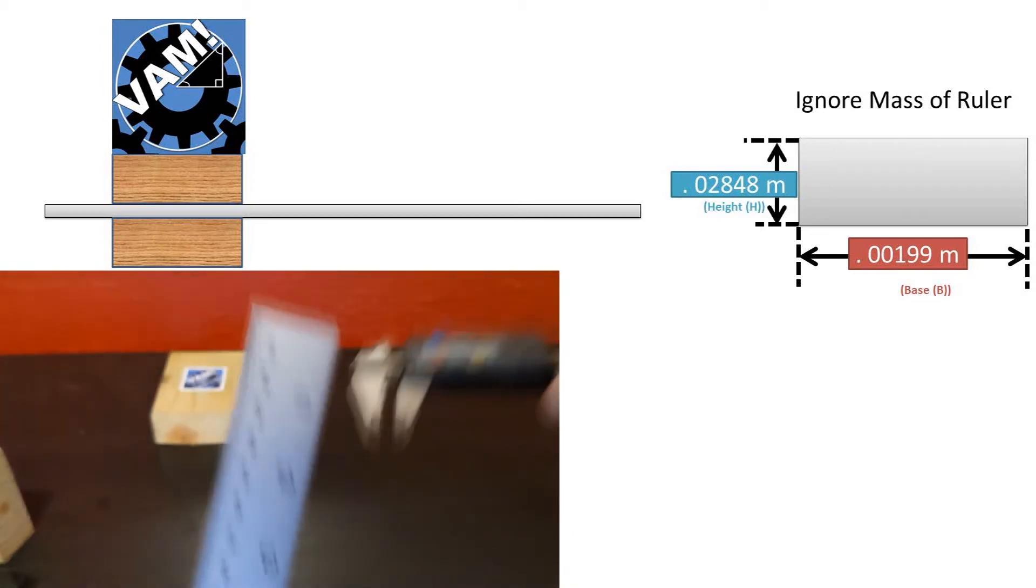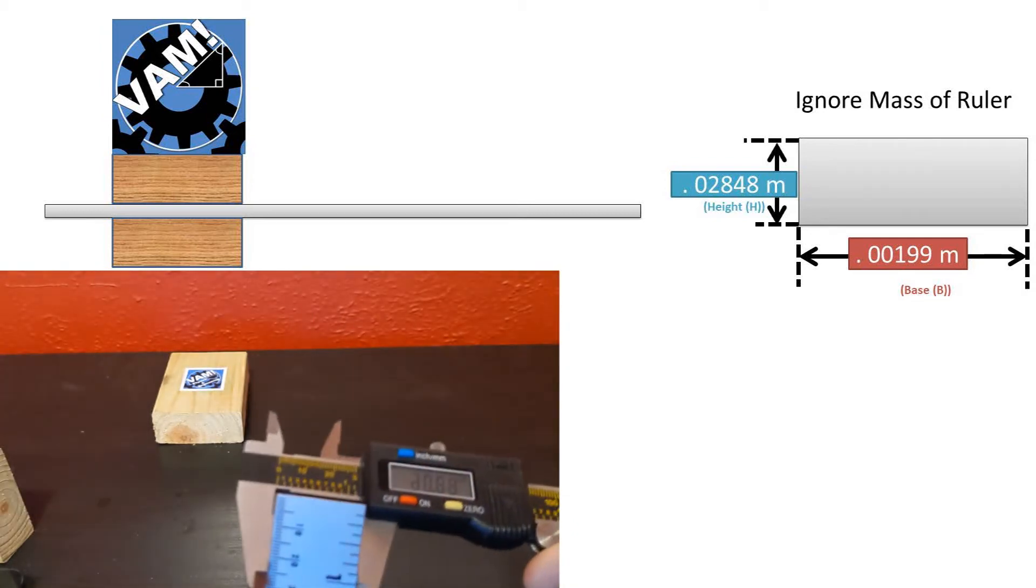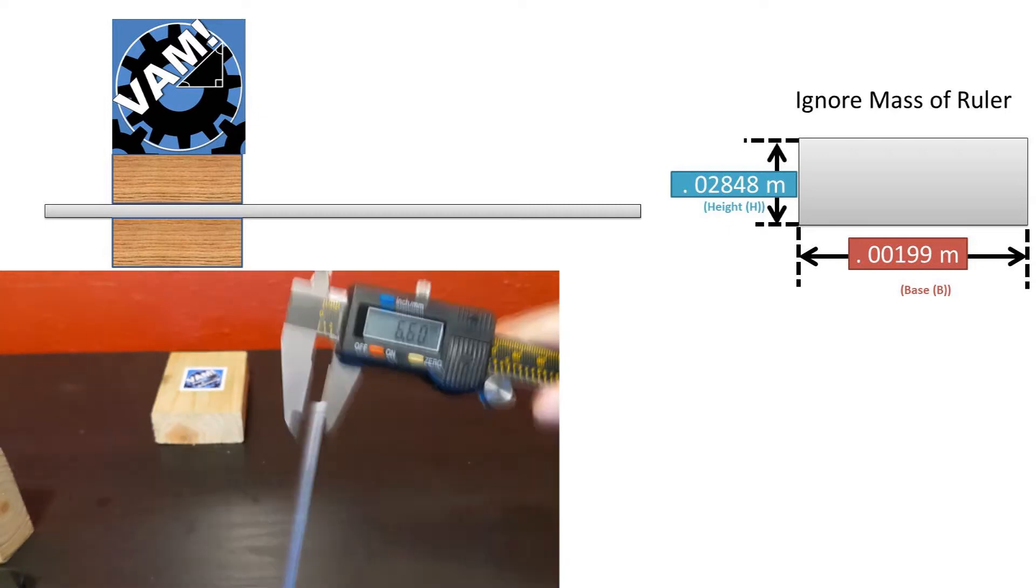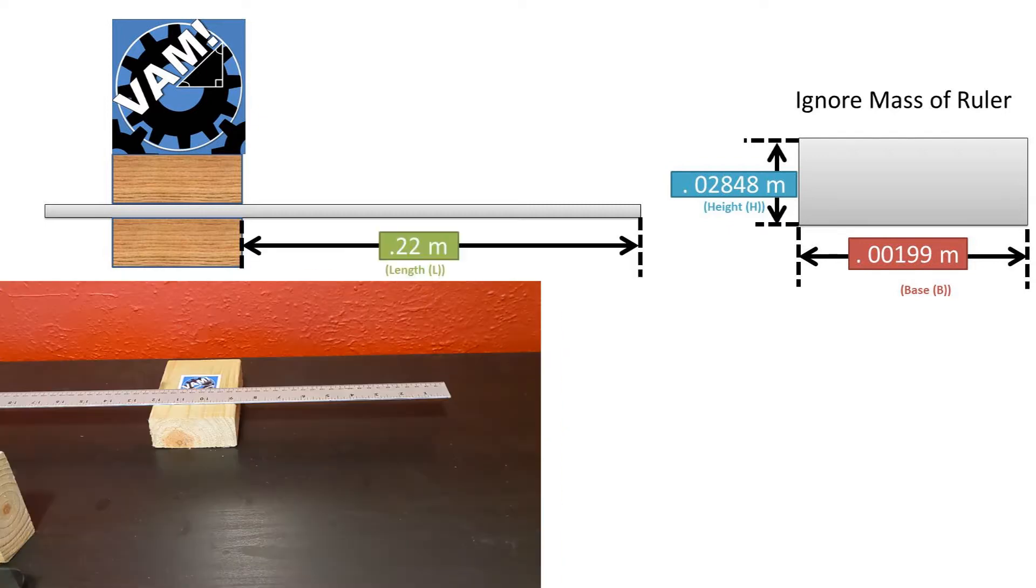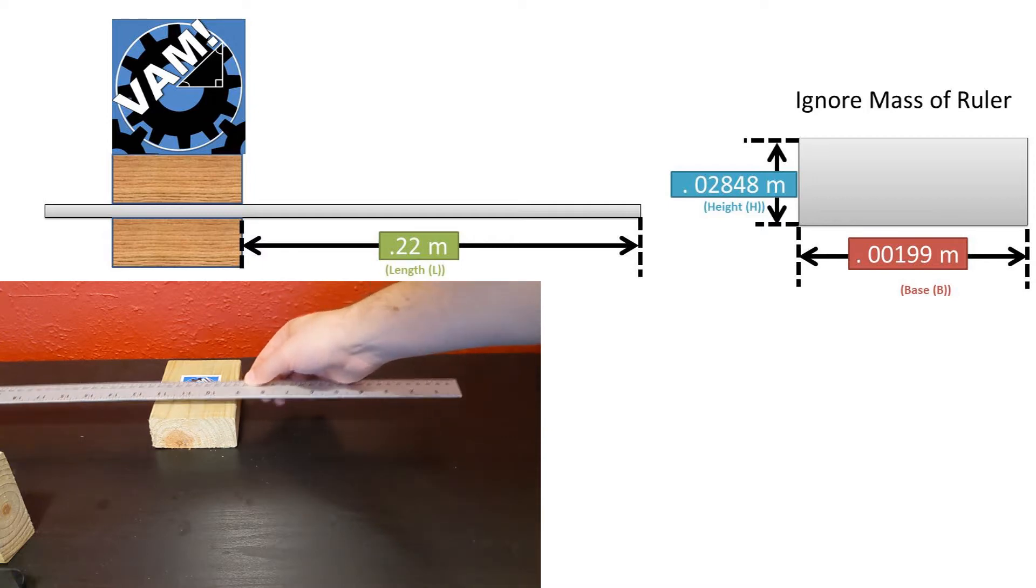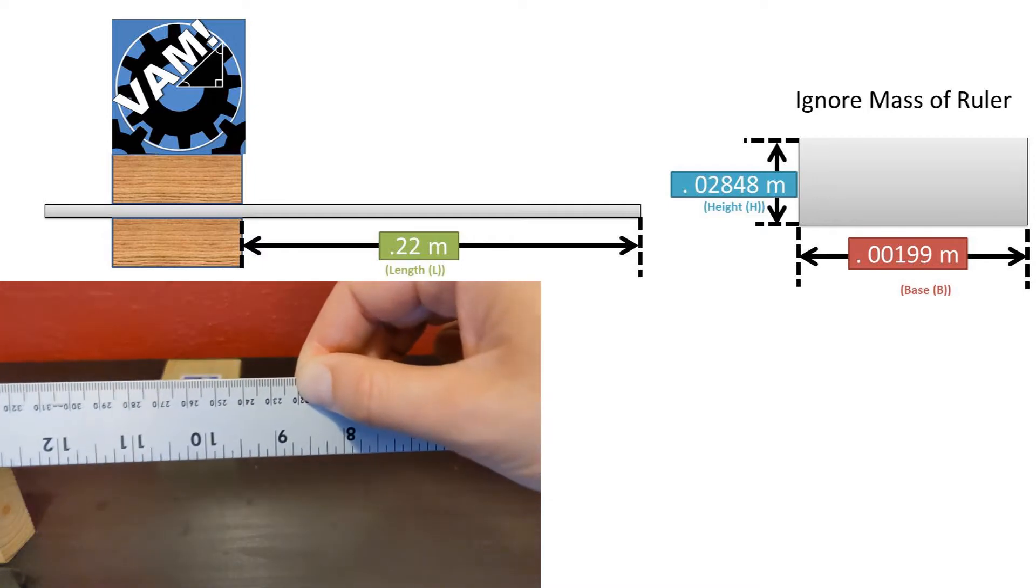In this problem, we have an aluminum ruler that has these dimensions for the height and base for the cross-section of the ruler. We place this ruler on a block so that it's cantilevered, and the cantilever length is 0.22 meters long.